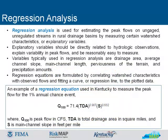Regression analysis is used for estimating the peak flows on ungauged or unregulated streams in rural discharge basins by measuring certain watershed characteristics or explanatory variables. Explanatory variables should be directly related to hydrologic observations, explain variability in peak flows, and be reasonably easy to measure. Variables typically used in regression analyses are drainage area, average channel slope, main channel length, perviousness of the terrain, and precipitation amounts.